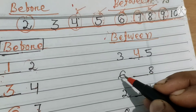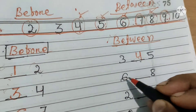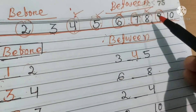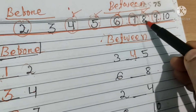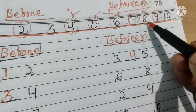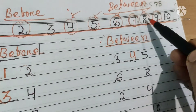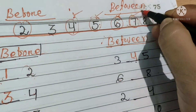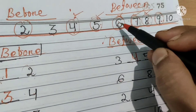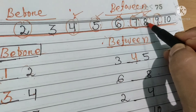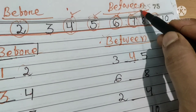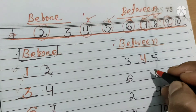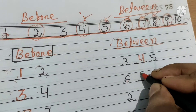Next one is six and eight. Chalou number line dekh lete hain. Six and eight kahan pe hai? Six and eight idhar hain. Six and eight ke beech mein konsa number aata hai? Number seven. What comes between six and eight? Number seven comes between six and eight. Haam kya likhenge? Number seven.